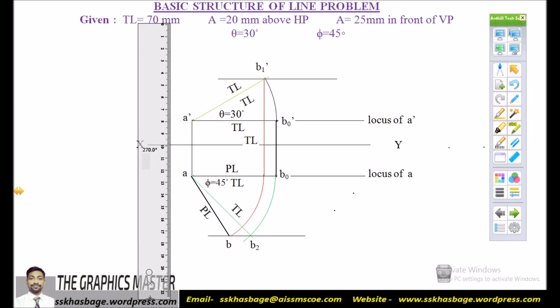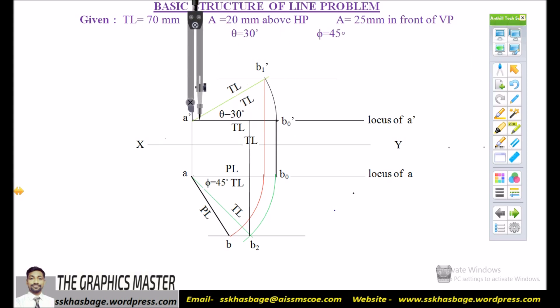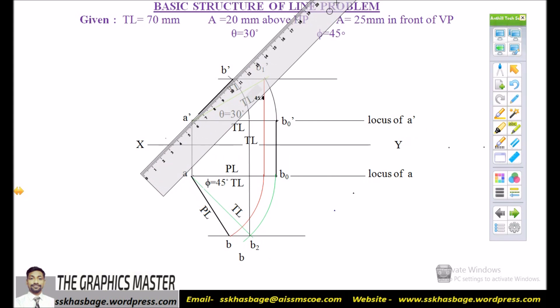Similarly, repeat this step in order to get the front view of the line that is the elevation length. Draw a perpendicular projector from B point in top view. Now we get EL and from this EL we have to mark it to the original position of EL and we get final front view or EL of the line AB.